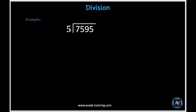Let's move on to some division. In this example, we are being told to divide 7,595 by 5. Before we go on, it's great to go over some terms. The number inside the division symbol is called the dividend — so 7,595 is the dividend. The number doing the dividing is called the divisor, so 5 is the divisor. The number we get when we're done dividing is called the quotient. To find the quotient, we first look at the first digit of the dividend, which is 7, and ask ourselves what number times 5 will get us closest to 7 without exceeding it.